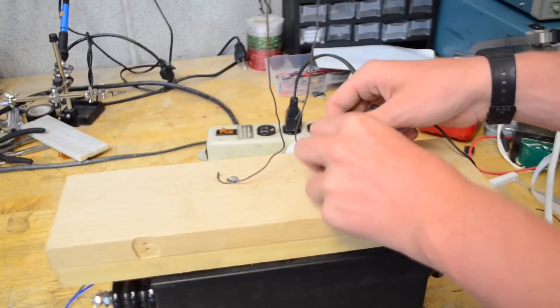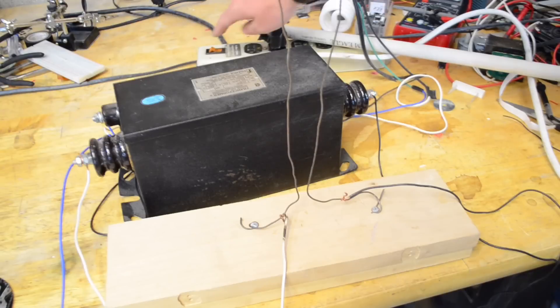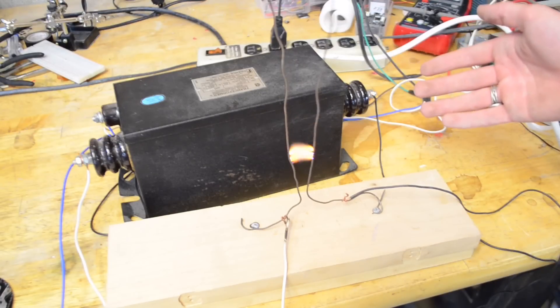So now we can attach one end of the high voltage output to here, and the other high voltage output to the other side. Now when we flip on the transformer, watch what happens. As you can see, it continuously climbs up the ladder.